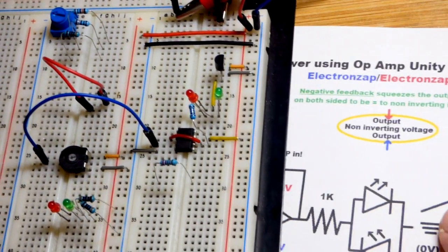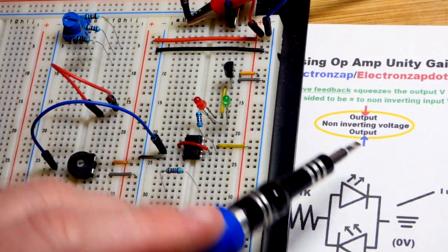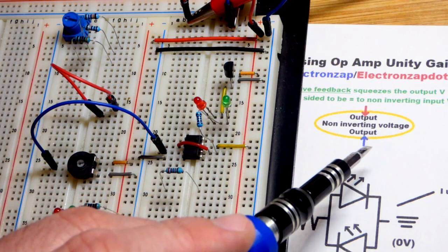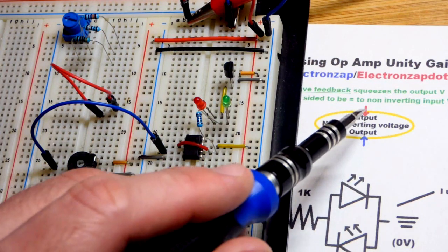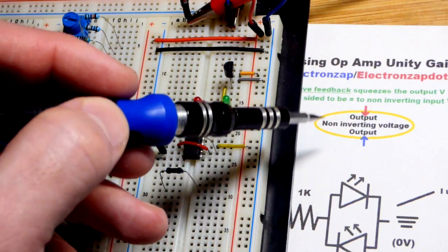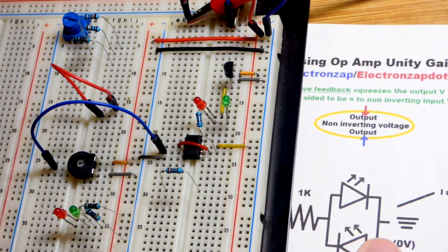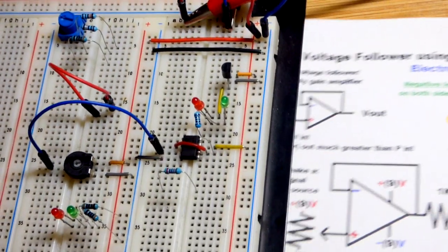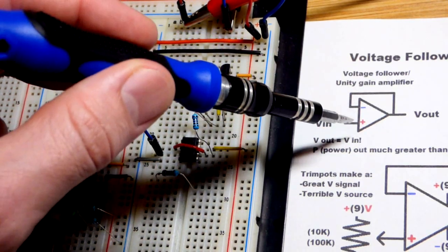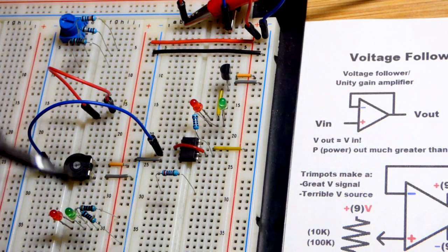And basically what it does, since we're feeding it to the inverting input, is if the output is lower than the non-inverting input voltage, it pushes the output voltage up. If it's higher, it pushes the output voltage down. So it's basically always squeezing the voltage to whatever the non-inverting input voltage is. But you need that negative feedback, because all it can look at are the two voltages there, and all it can do is adjust the voltage coming out right there.